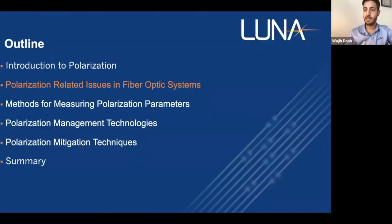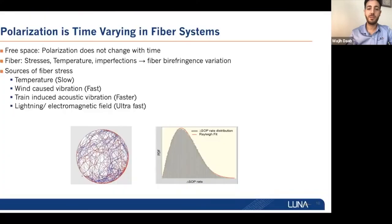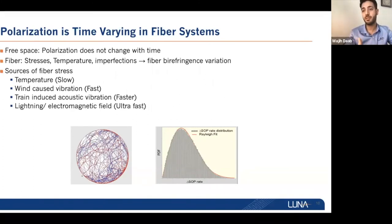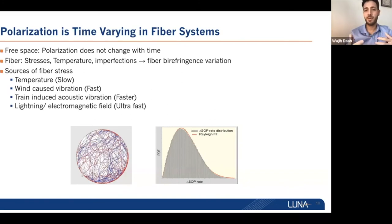Polarization is very important and there are multiple polarization-related issues in fiber optic systems. The first important one is that polarization is time-varying — it's not constant. It changes due to external and internal factors. Internal factors include the imperfections and asymmetry of the fiber optic. External factors can be temperature variations or external stresses. When researchers looked at the rate of change in polarization in standard fiber optic, they found it follows the Rayleigh distribution.